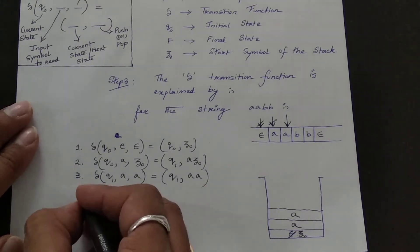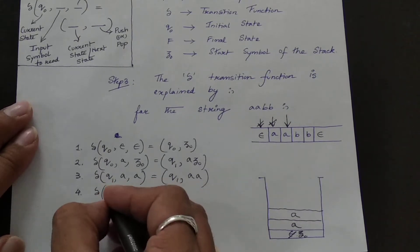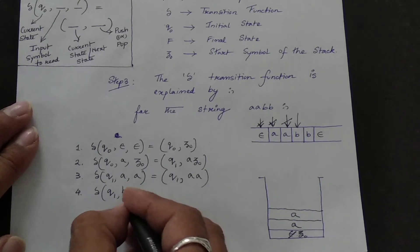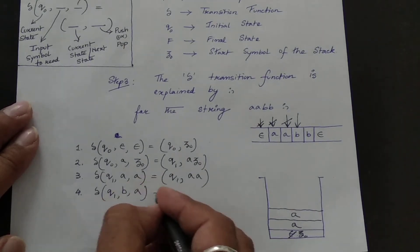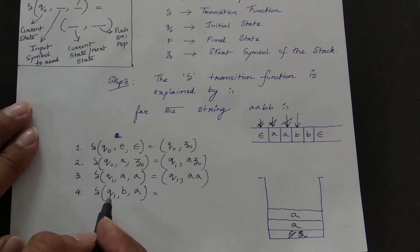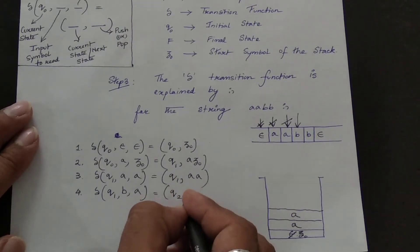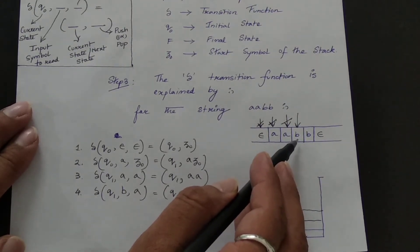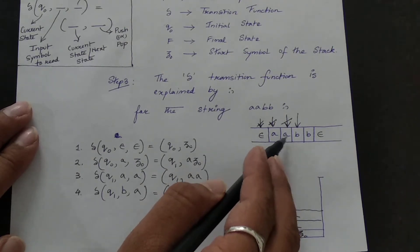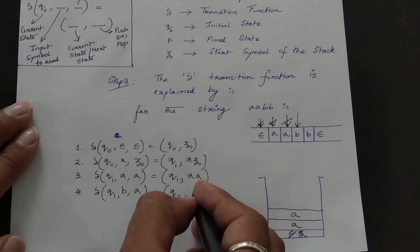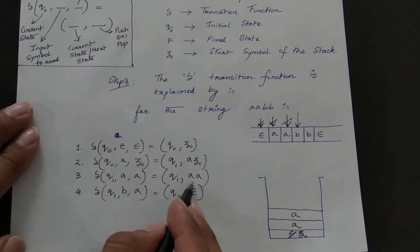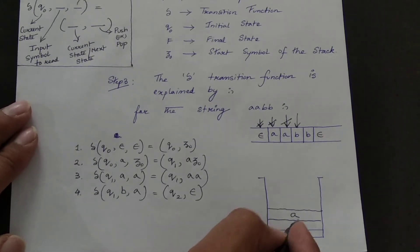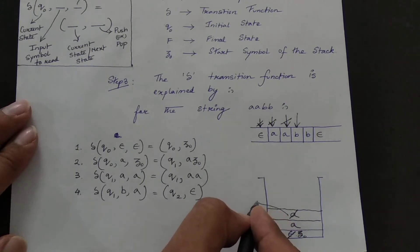Step 4: Delta(q1, b, a) = (q2, ε). The current state is q1, the next input symbol is 'b', and the top of the stack is 'a'. Since the input symbols are different, the state changes to q2. Writing epsilon here means we pop the top of the stack — 'a' is popped and the stack moves back.